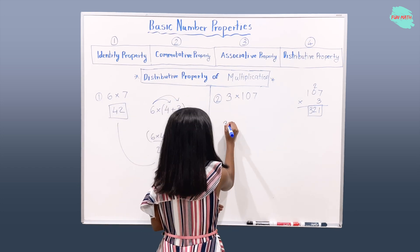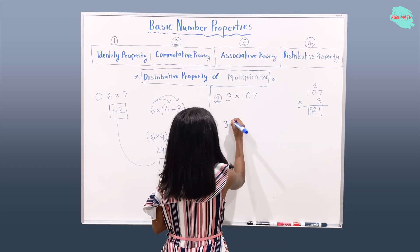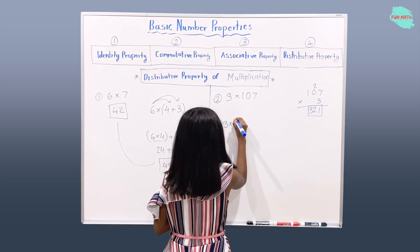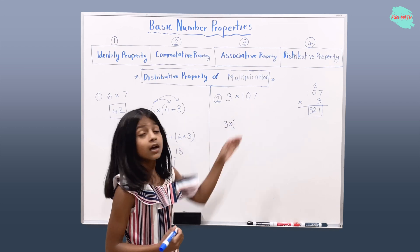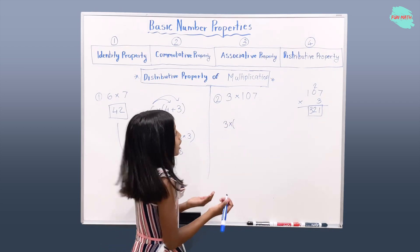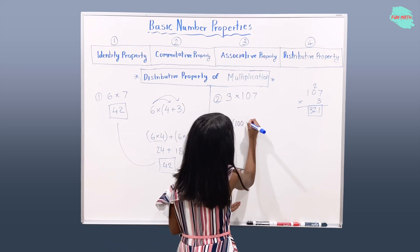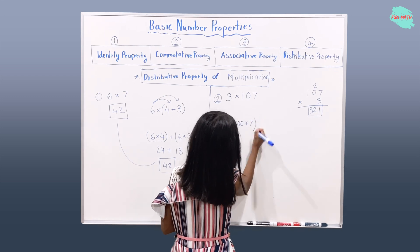Okay, so 3, we're going to rewrite it, and multiplication sign here. Okay, now we're going to split 107. And I'm going to write 107 and split it as 100 and 7, like that.